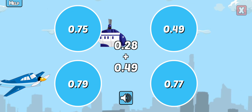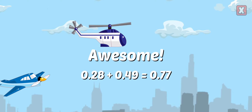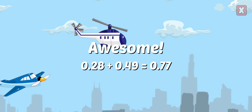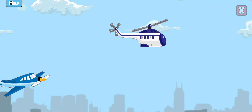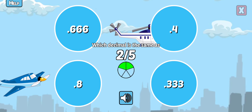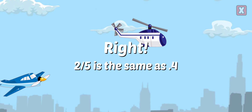Add these two decimals together. Right! 2 fifths is the same as 0.4.